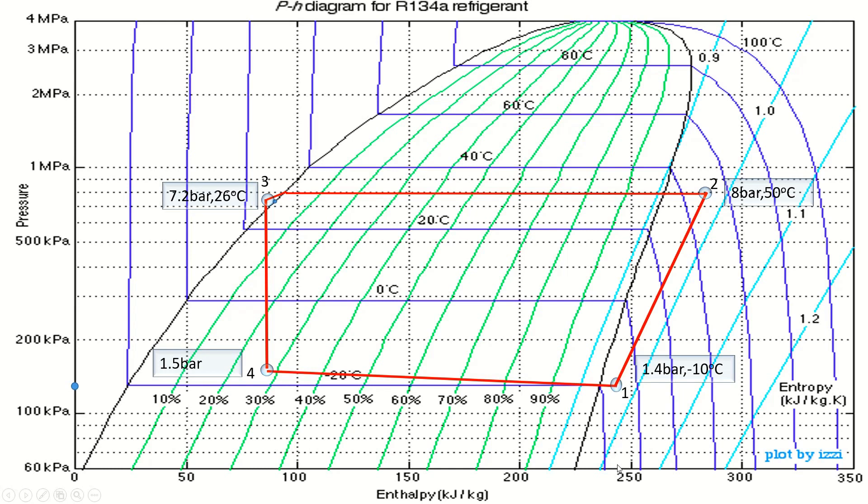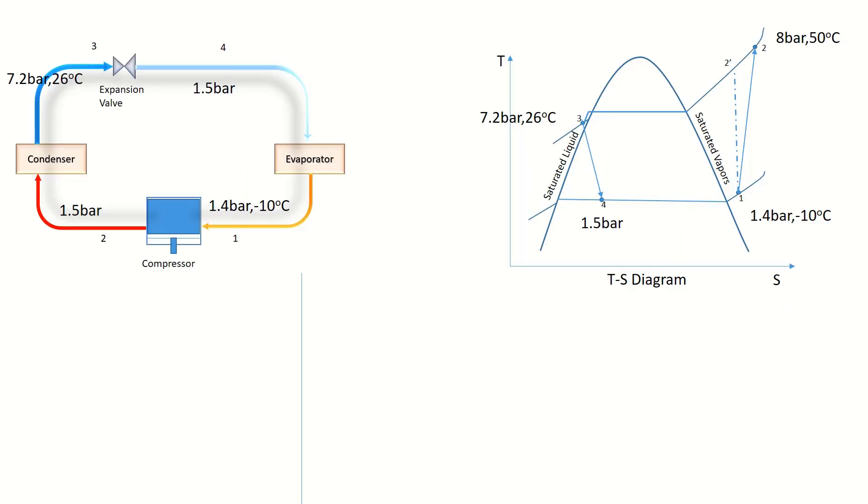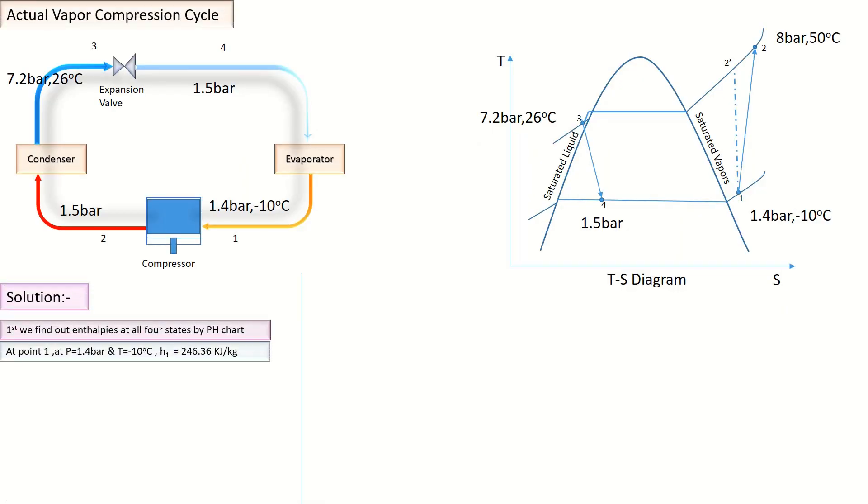At Point 1, the enthalpy is around 246 kJ/kg. At Point 2, enthalpy is around 286 point something. We have to find out all the enthalpies. At Point 1, our enthalpy is h₁ = 246 kJ/kg. At Point 2, h₂ = 286.69 kJ/kg. At Point 3, enthalpy is h₃ = 87.83 kJ/kg and enthalpy at Point 3 and 4 remains constant, so h₄ = 87.83 kJ/kg.